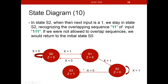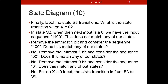In our state diagram, when we're in S2 and x=1, we remove the leftmost 1 from the sequence 1,1,1 and look at the remaining 1,1 — which matches S2. So we stay in state S2 with a self-loop for x=1. We're almost done; we now need to determine what happens when we're in state S3 and receive inputs.